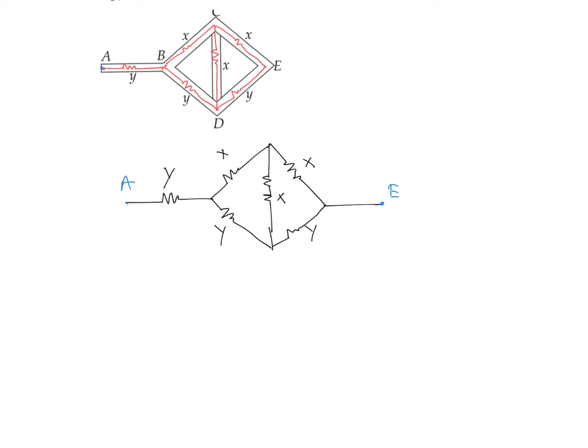Using the concept of the Wheatstone bridge, if R1/R2 = R3/R4, then the bridge is balanced — meaning there is no potential difference across the middle resistor. So we can remove it from the circuit. After removing these two balanced resistances, the remaining resistors form series combinations that are in parallel with each other.